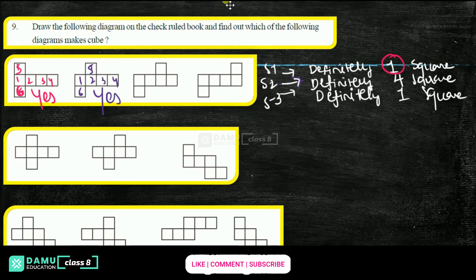Next one: counting squares — one, two, three, four in the middle stage, then top five and down six. Yes, it is also possible.